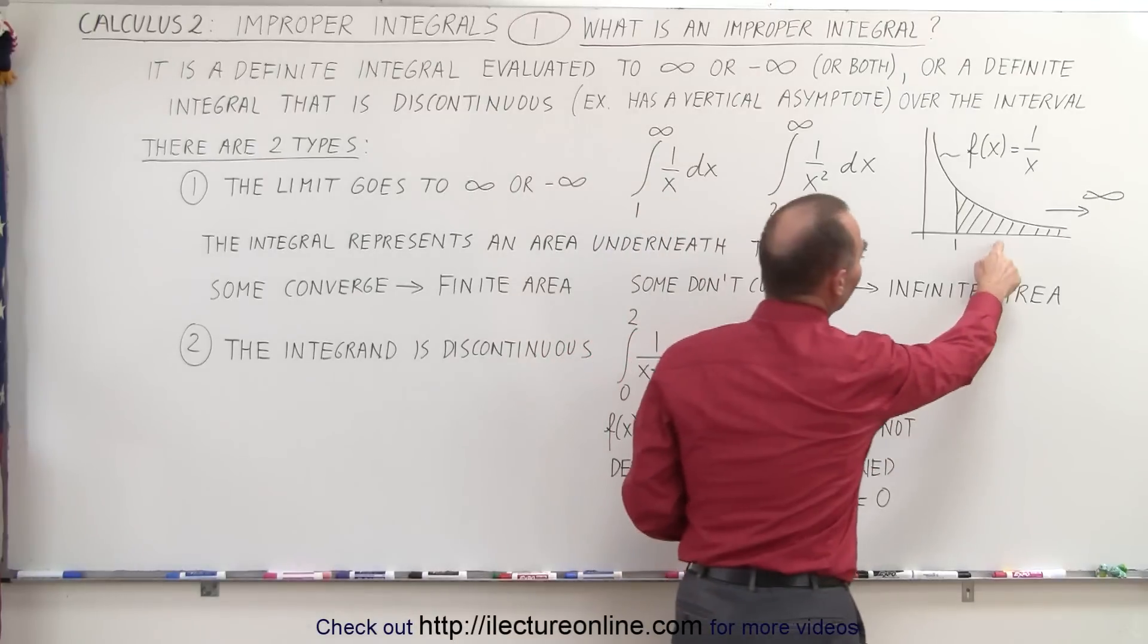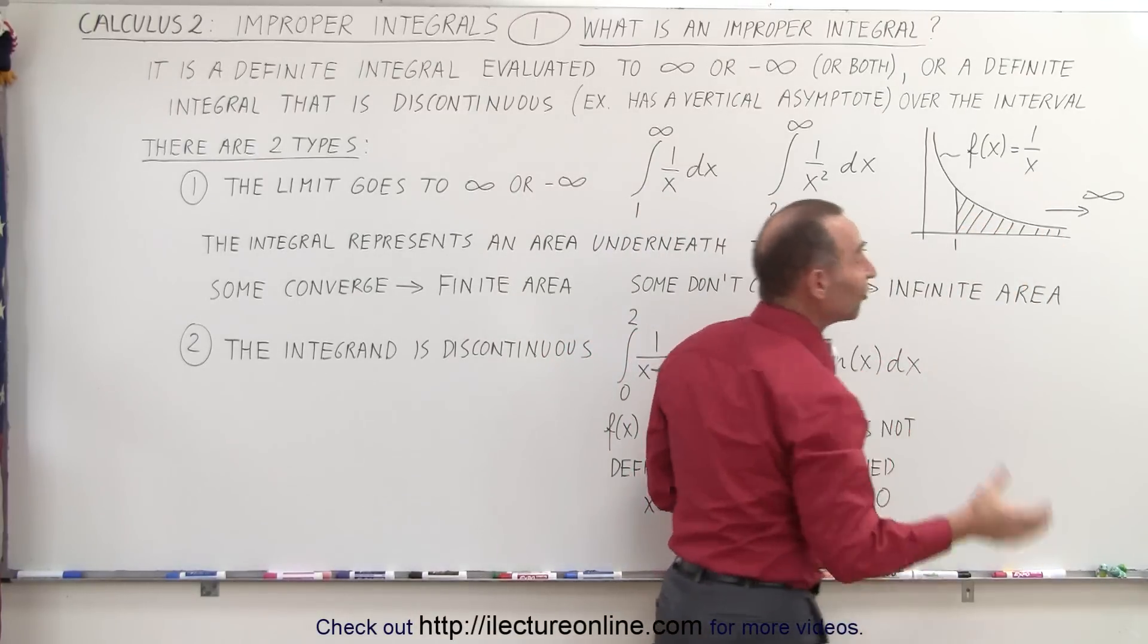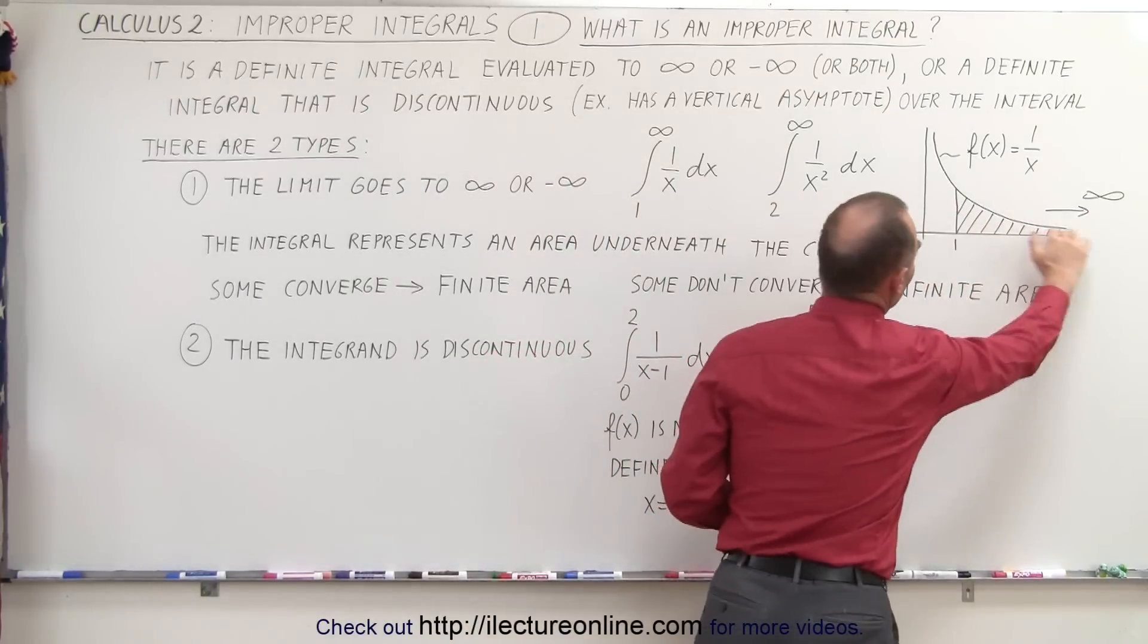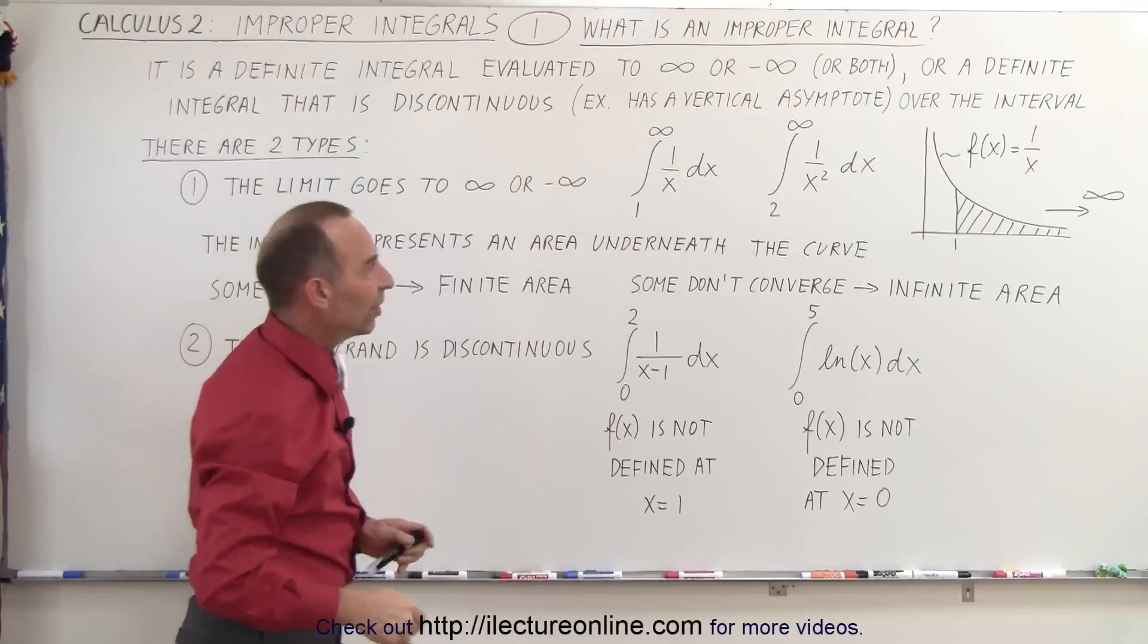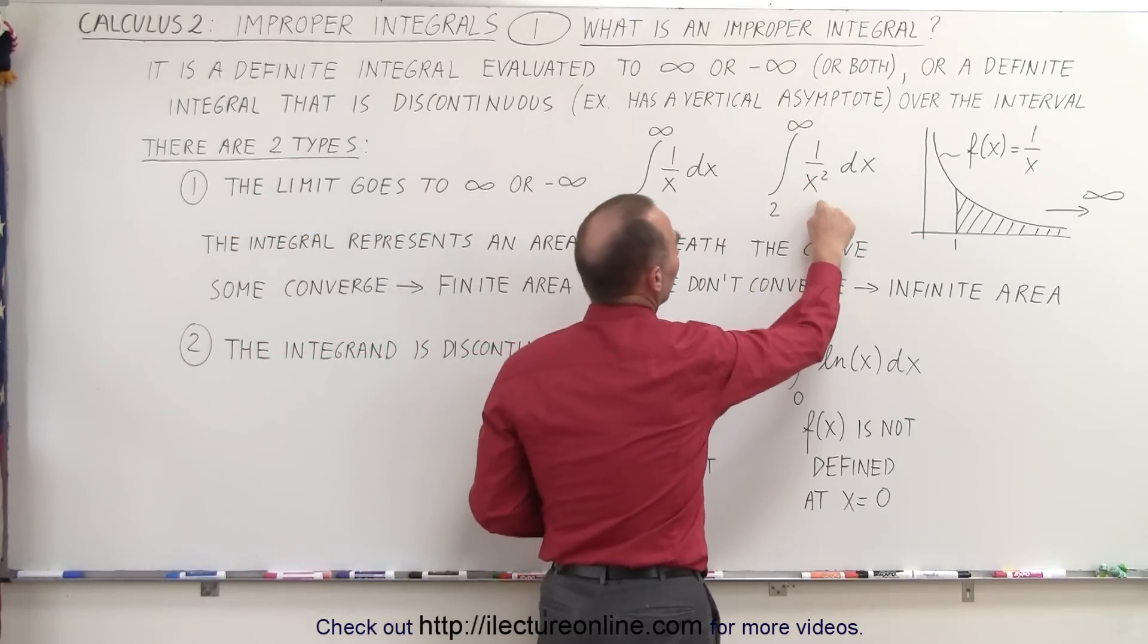For this particular example, the integral does not converge. And there's therefore an infinite amount of area underneath the curve when you go all the way up to infinity. The second example, 1 over x squared dx, from 2 to infinity,